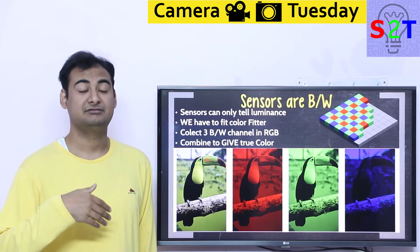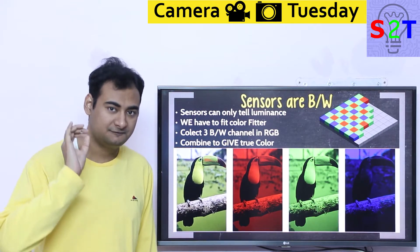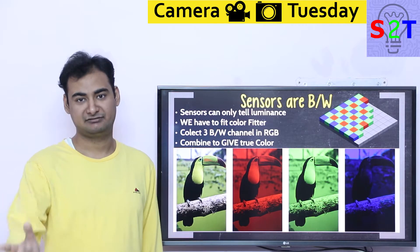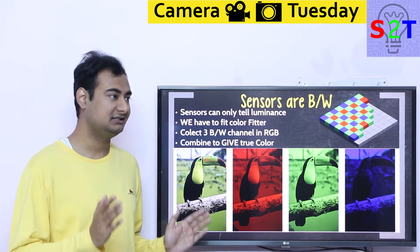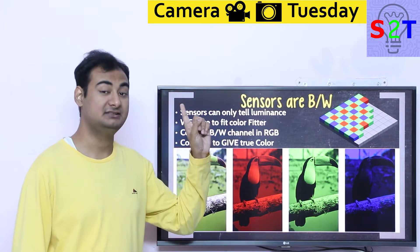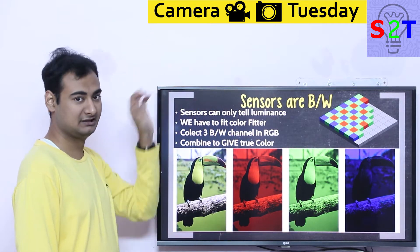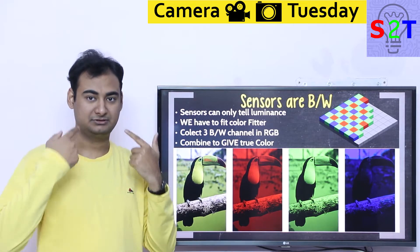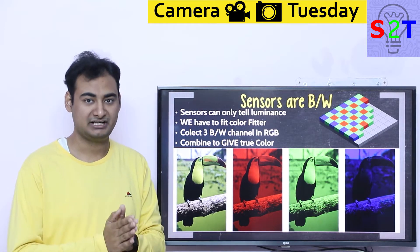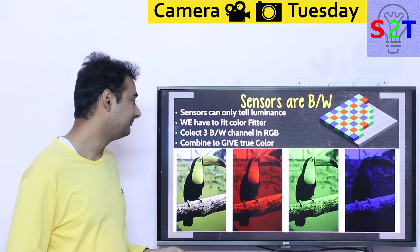Before we understand why we have to use multiple sensors, we have to understand the core fundamental reality of our sensor world. It's black and white, also known as monochromatic. Basically, every camera sensor can only tell you one thing: luminance — basically how bright something is. This is bright, this is dark, this is mid. That's all it does. It's monochromatic — all it can give you is a black and white image.